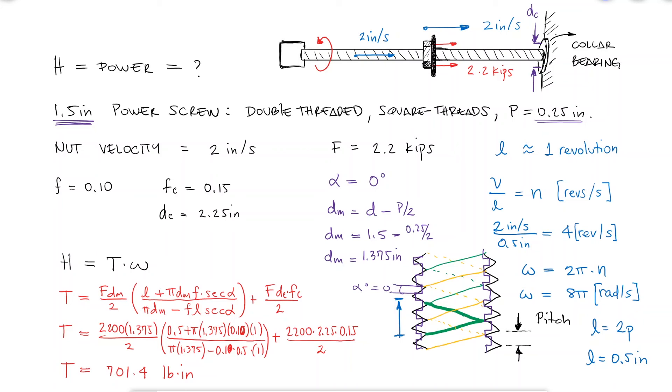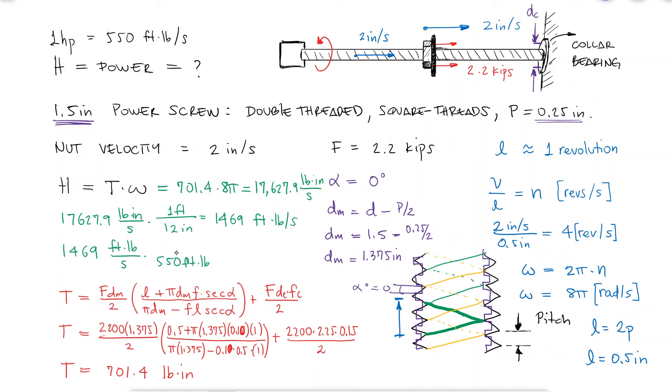Knowing that one horsepower is equal to 550 feet pounds per second, we find that the power is 17,628 pound inches per second, 1,469 feet pounds per second, or 2.67 horsepower.